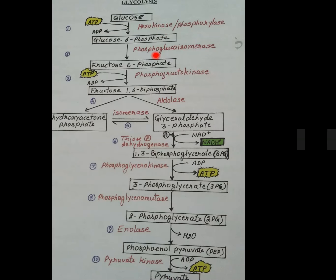Glucose-6-phosphate to fructose-6-phosphate: the enzyme is phosphoglucoisomerase. Fructose-6-phosphate to fructose-1,6-bisphosphate: the enzyme is phosphofructokinase. Fructose-1,6-bisphosphate is cleaved into dihydroxyacetone phosphate and glyceraldehyde-3-phosphate by the enzyme aldolase.